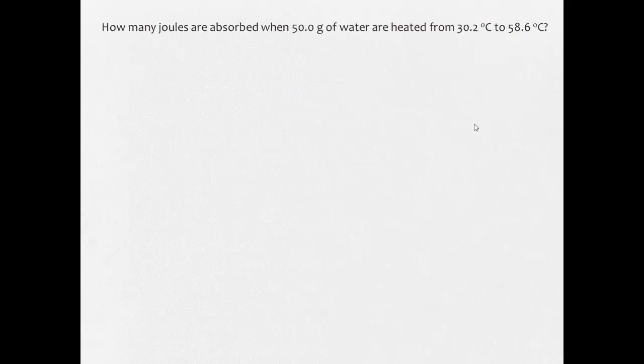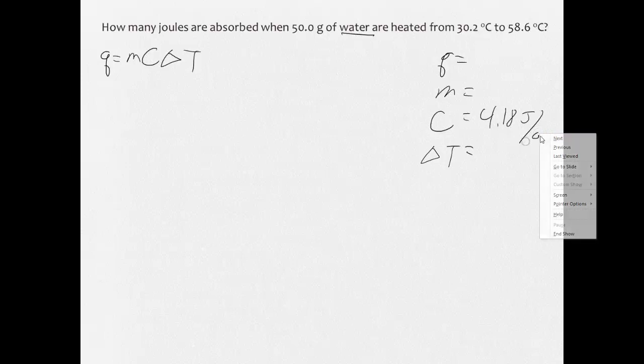Question time. How many joules are absorbed when 50 grams of water are heated from 30.2 to 58.6 degrees Celsius? So here's what you need to do. You need to go back to the other example and watch the steps. Write down the equation. Q equals mc∆T. Over here, Q equals, M equals, C equals, delta T equals. It's water, so it's 4.18 joules over grams degrees Celsius. What's the Q? What's the mass? What's the change in temperature? You've got to find those in the problem and be able to come up with an answer.